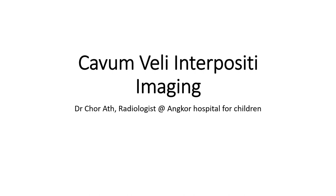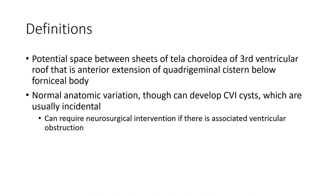Hello everyone, today I'm going to show you our cable belly interest OCT imaging. Definition: potential space between the seat of the cellar choroida, certainly called ventricular roof, that is the anterior extension of the germinal system below the pulmonary body. Normal anatomic variant, though can develop CVI cysts which are usually incidental findings but can require neurosurgical intervention.